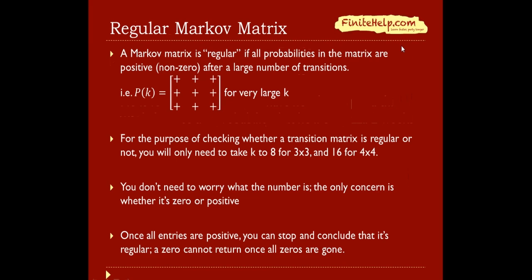Here we're going to learn about a regular Markov matrix. The definition is that the Markov matrix is regular if all the probabilities in the matrix are positive after a large number of transitions. This is saying that Pk is going to be all non-zeros, represented with a plus sign, for very large k.